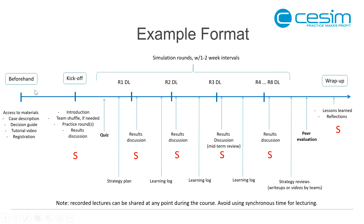The process starts with sharing materials before the kickoff — you can share the case description, decision guide, and tutorial video beforehand. You also want to have an idea of how students will be placed in teams, which can be quite important. In the online and virtual format, the recommendation is that you have a very good idea of how you want to put students in teams. In some cases it is also possible to have students do the simulation individually, though that takes away the social learning aspect. Then we come to the first synchronous session where the instructor can give an overview of the simulation, and we can still reshuffle teams if needed — for example if you have fewer or more participants than expected.